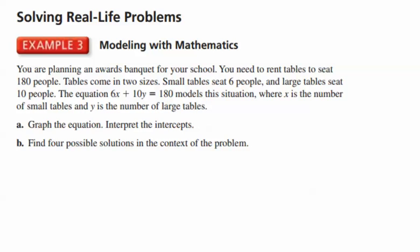And so, we have here example number three, modeling with mathematics. You are planning an awards banquet for your school. You need to rent tables to seat 180 people. Tables come in two sizes. Small tables seat six people. Large tables seat ten people. The equation 6x plus 10y equals 180 models this situation where x is the number of small tables and y is the number of large tables.